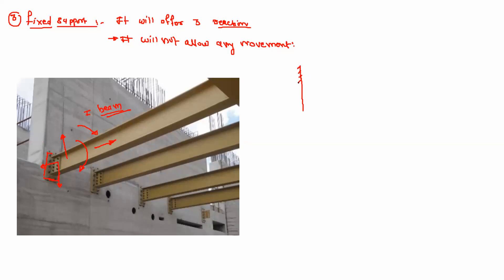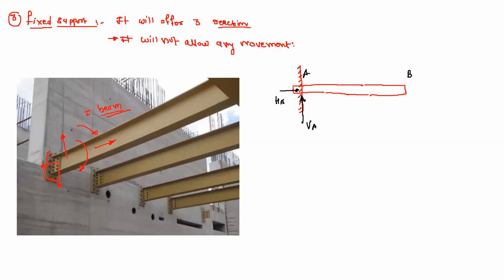The fixed support is represented with the beam AB attached to the wall. It offers two reactions similar to hinge support: one vertical reaction VA and one horizontal reaction HA. Additionally, unlike the hinge support, there is a third reaction — a moment reaction MA.